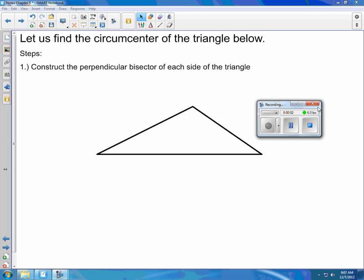All right, so today we're going to construct the circumcenter of a triangle. Remember that the definition of circumcenter of a triangle is the point of concurrency for the perpendicular bisectors of each of the sides of the triangle.